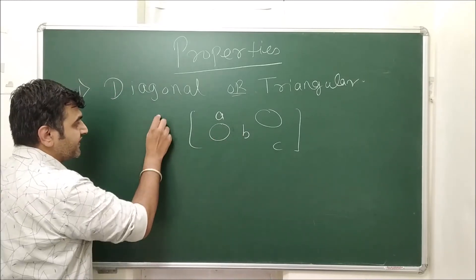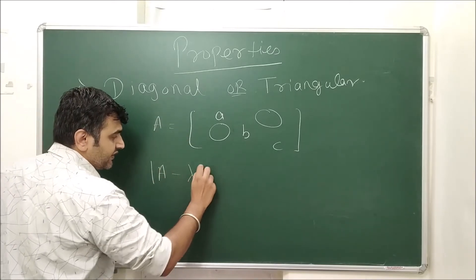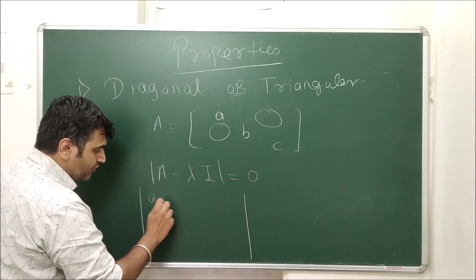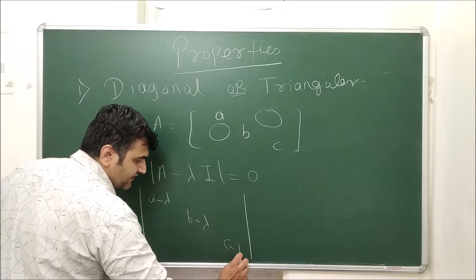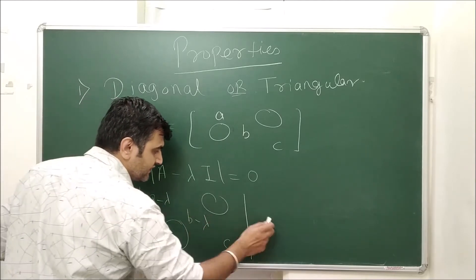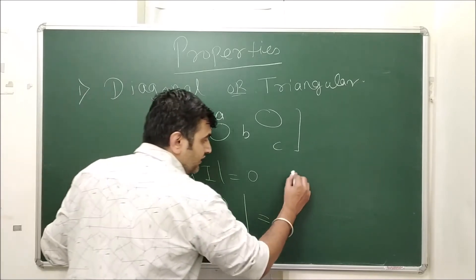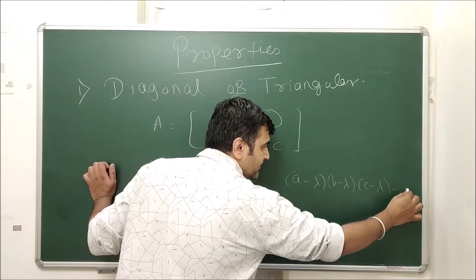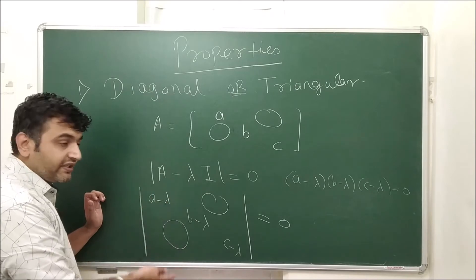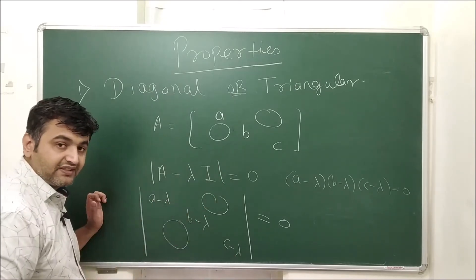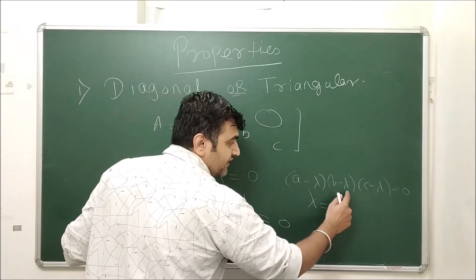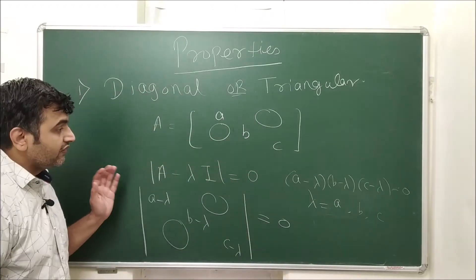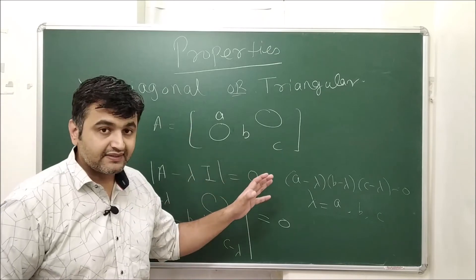To find eigenvalues, you solve det(A − λI) = 0. For a diagonal matrix, this gives (A − λ)(B − λ)(C − λ) = 0, because the determinant of a diagonal matrix is the product of its diagonal entries. Setting this to zero means λ = A, B, or C — the diagonal entries are the eigenvalues.